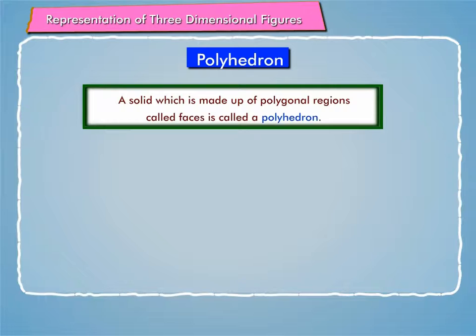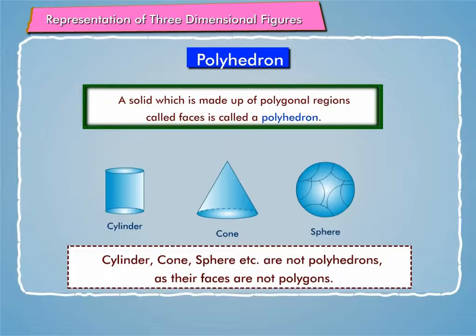One point to be noted is, cylinder, cone, sphere, etc. are not polyhedrons as their faces are not polygons.